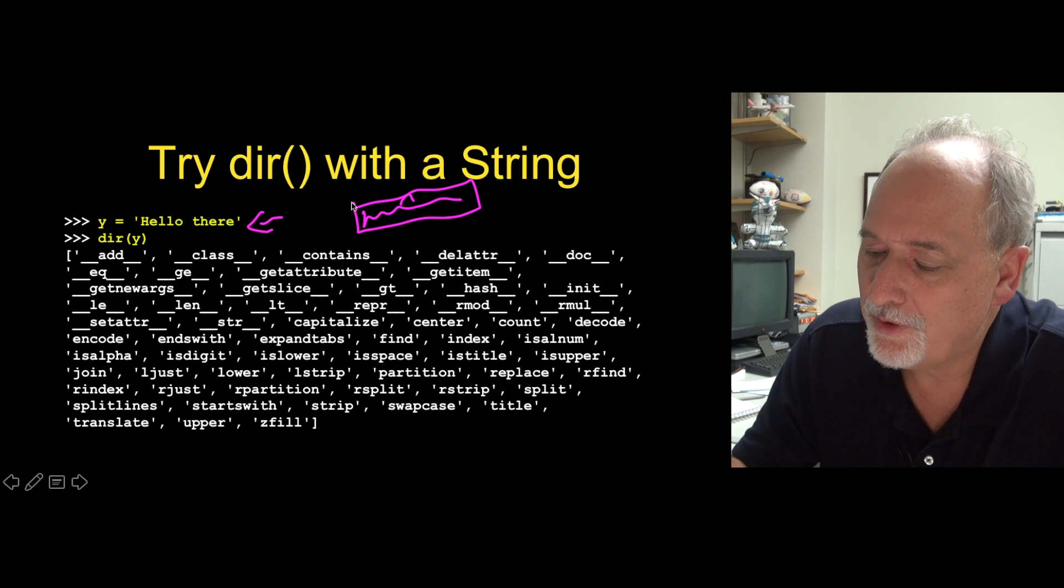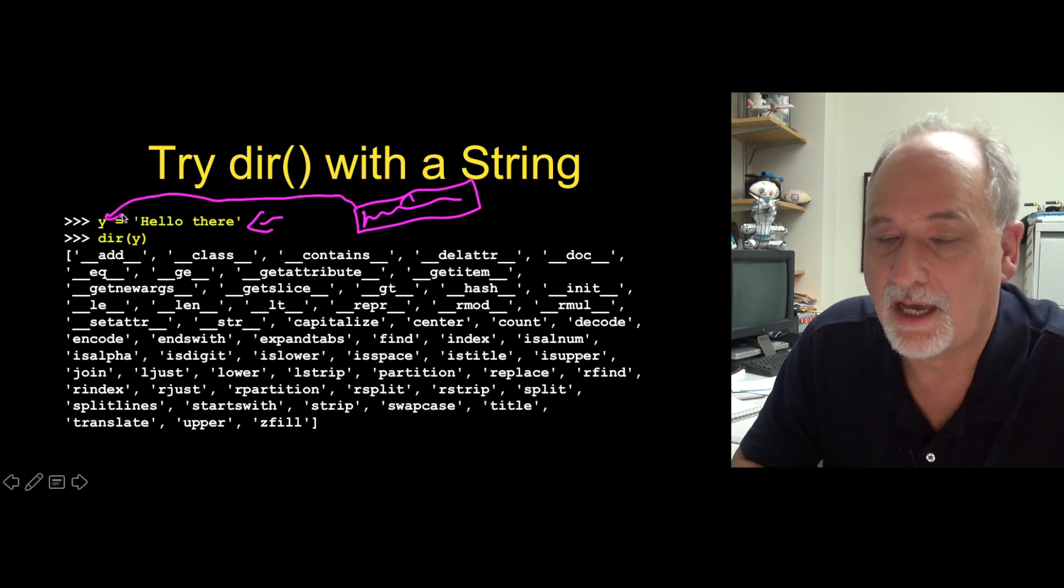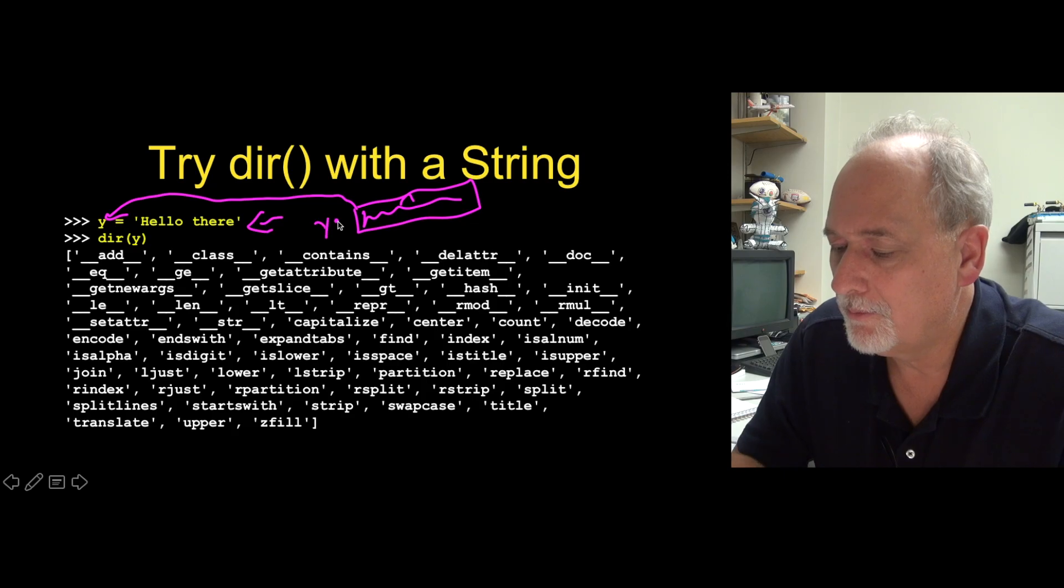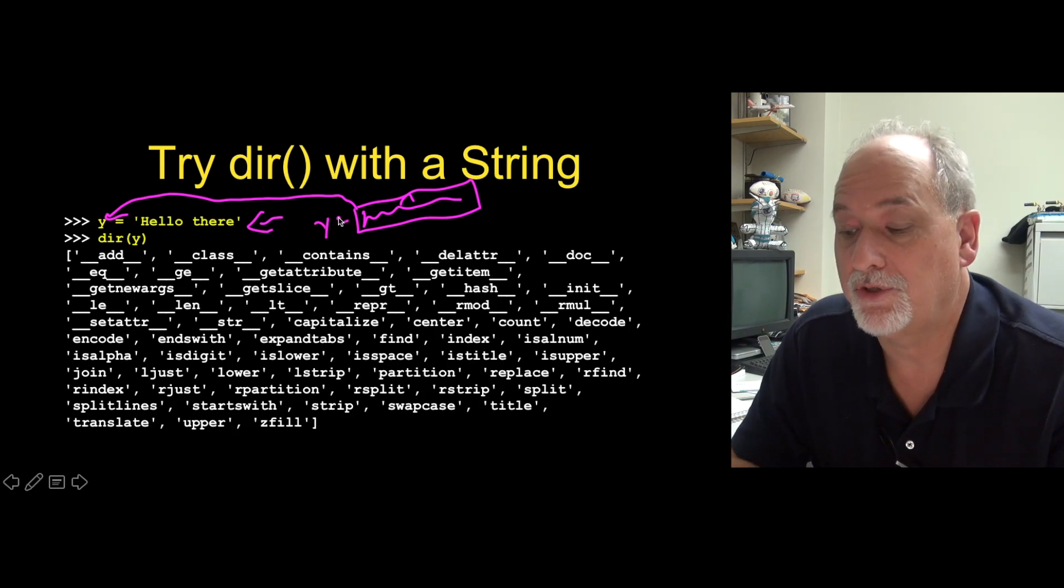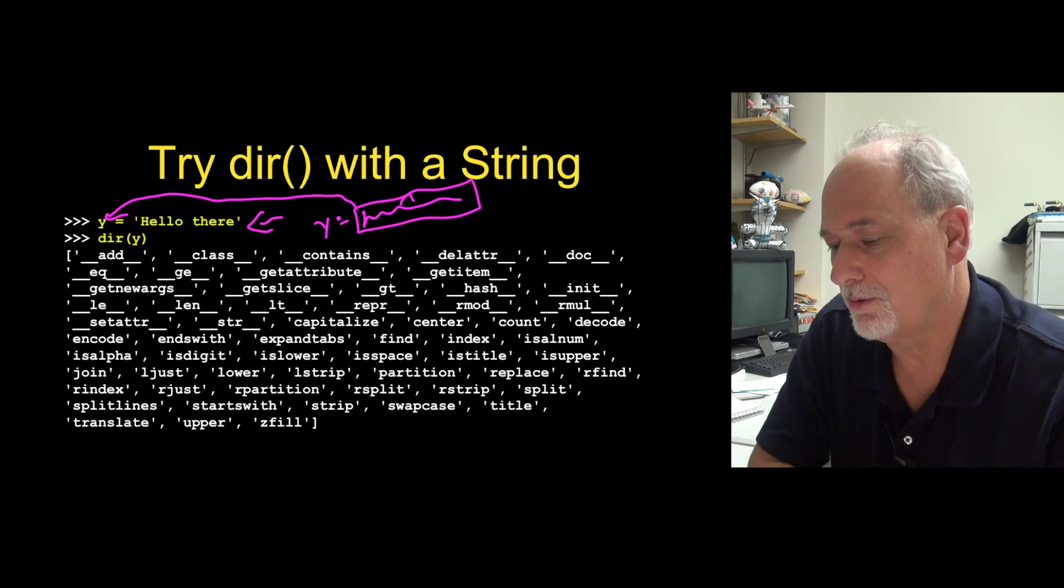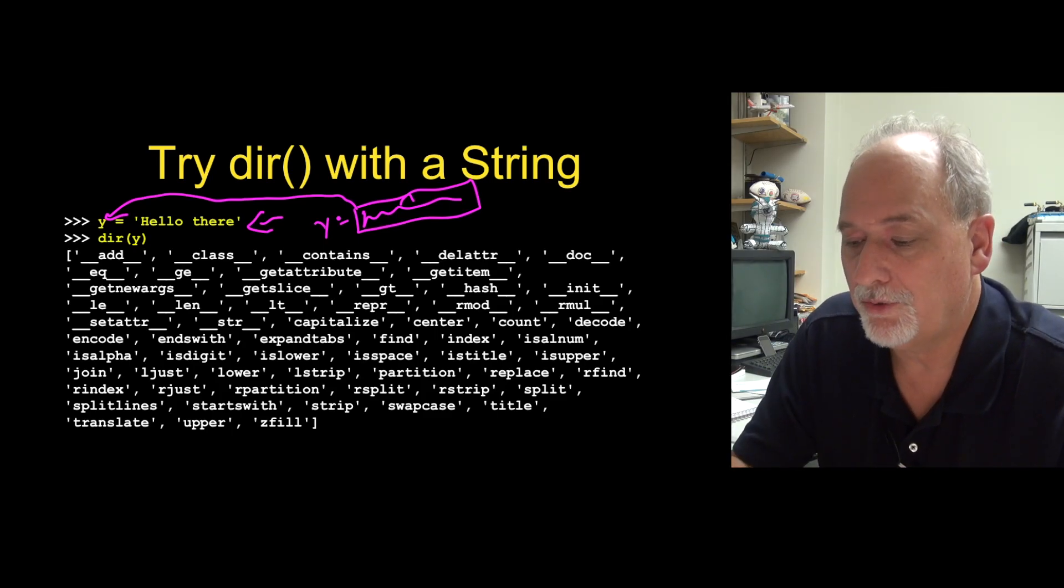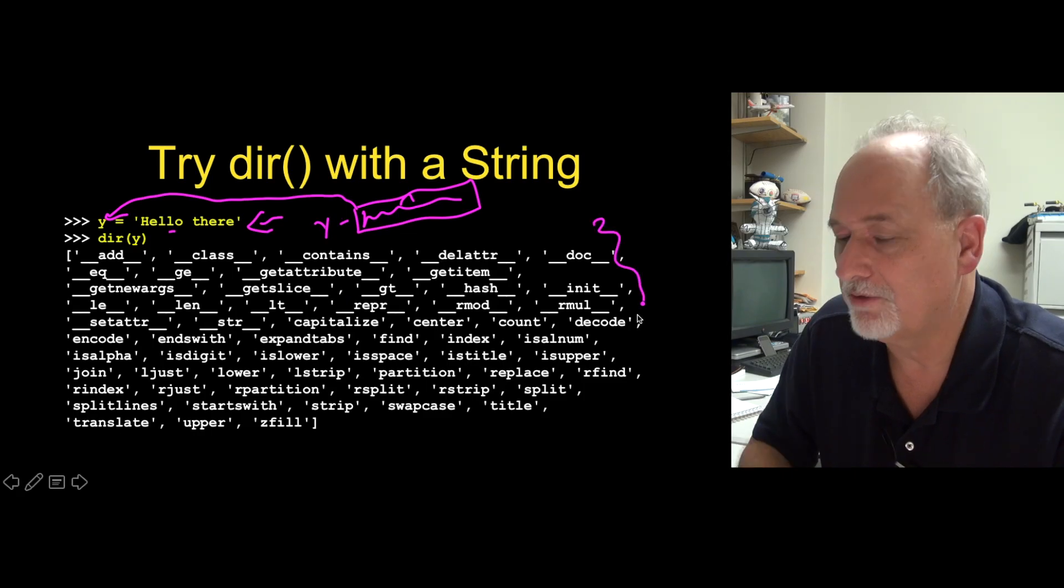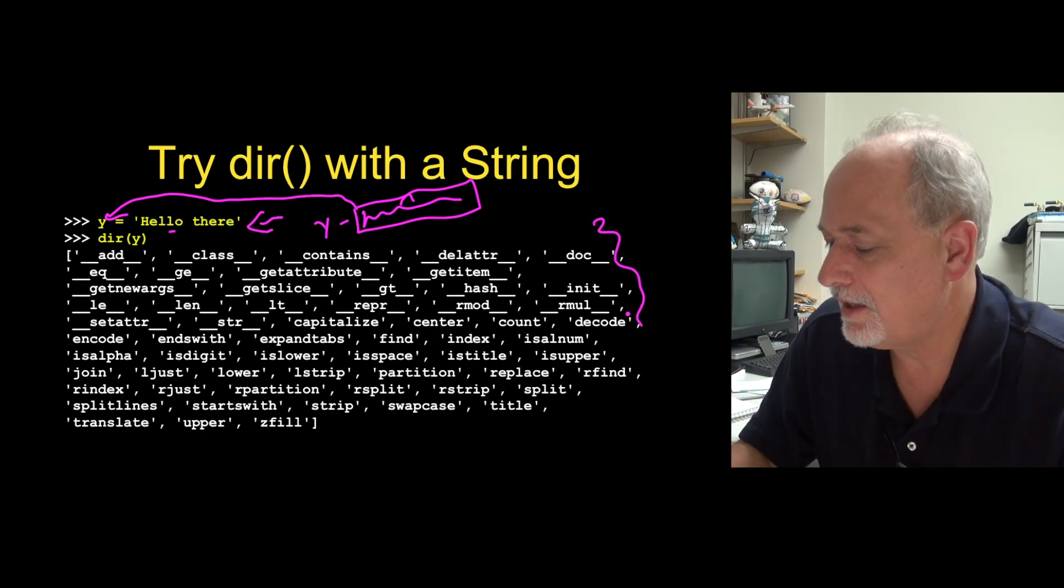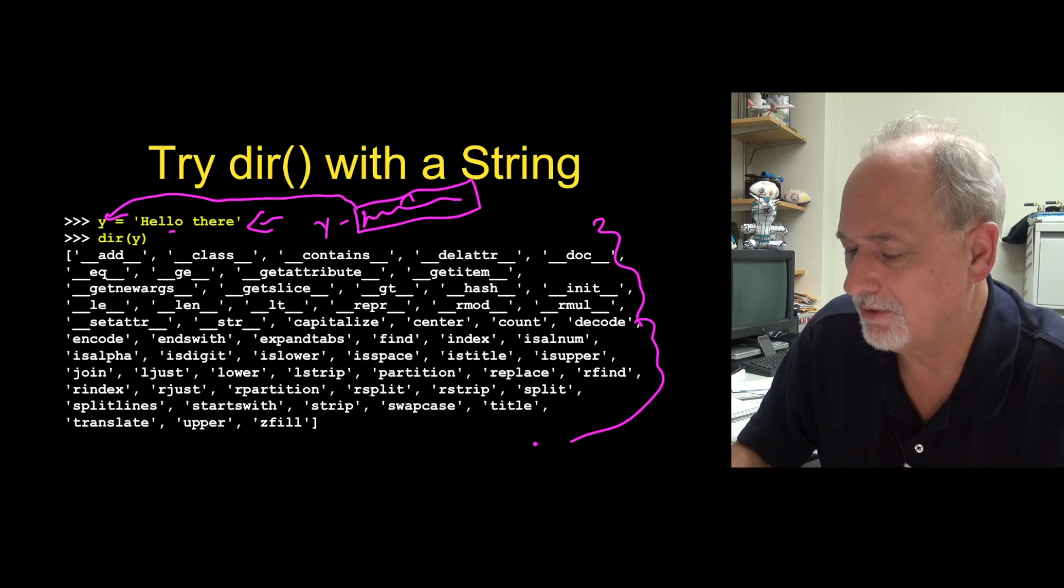And then when that is done being constructed, stick that into y, right? And so y now points to a string object that's been pre-initialized to the string hello there. Now that's a long way of saying hello there ends up in y. But in oo terms, we can talk about that. If we do a dir of that, we see a whole bunch of internal methods, which have double underscores.